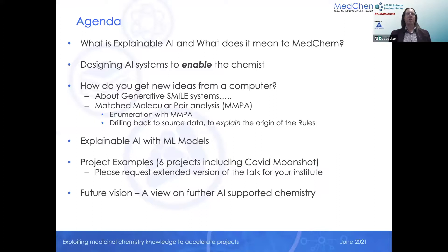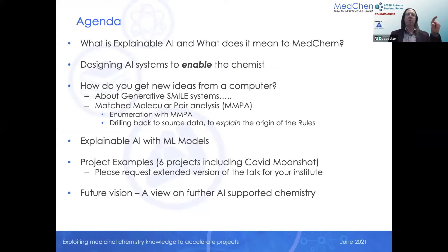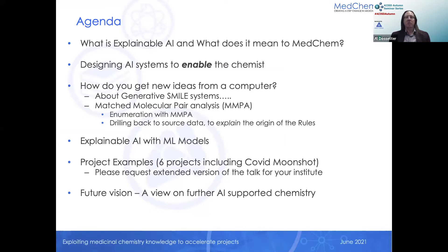I'm going to talk about some of the same themes as the previous speaker, probably in a bit more detail, and talk further about what the medicinal chemist needs to be able to do AI, and address some of the issues that AI systems encounter when they start to interact with humans. That means I'm obviously going to cover what explainable AI is.